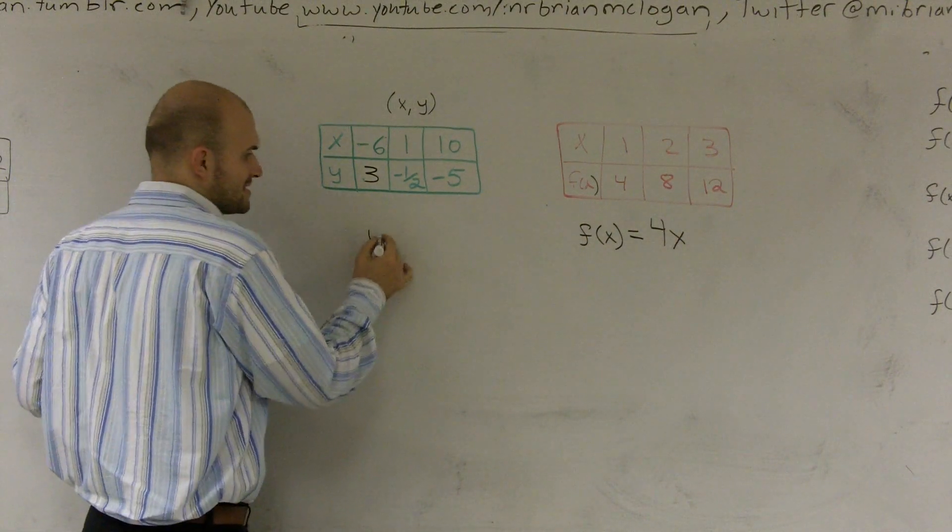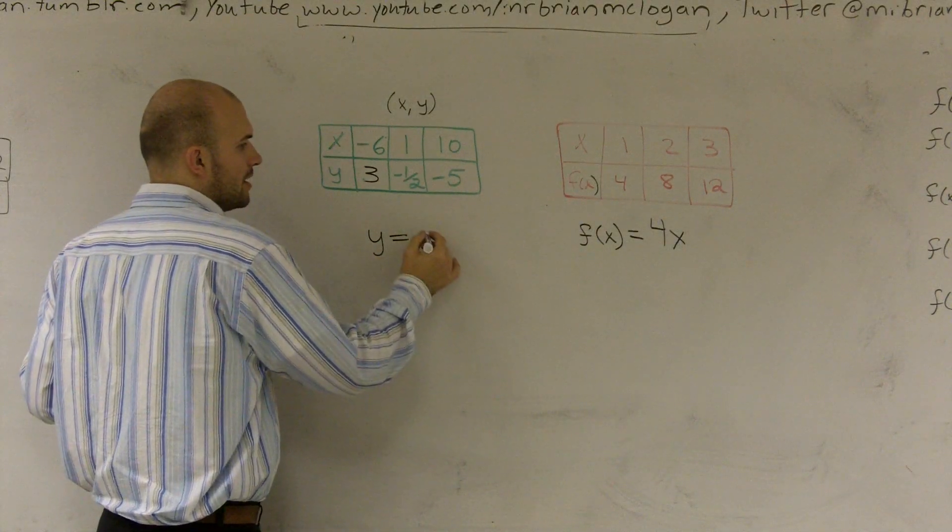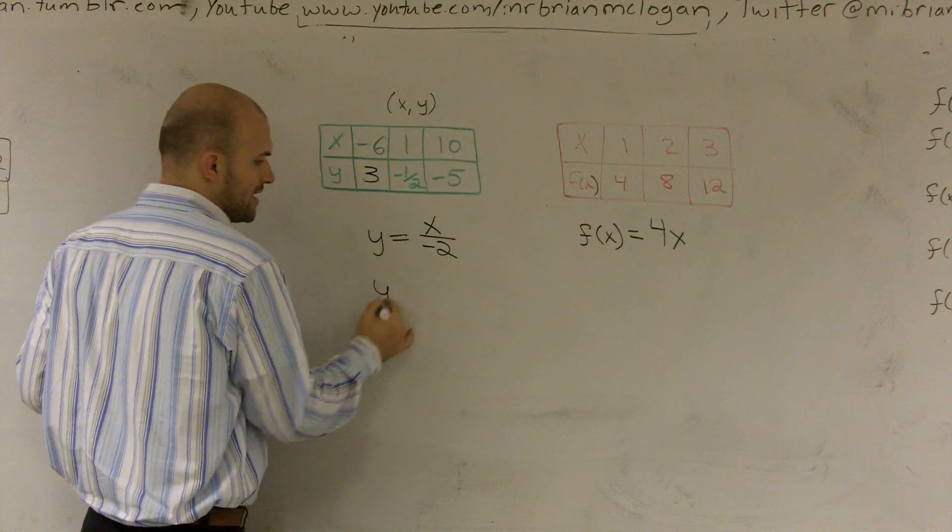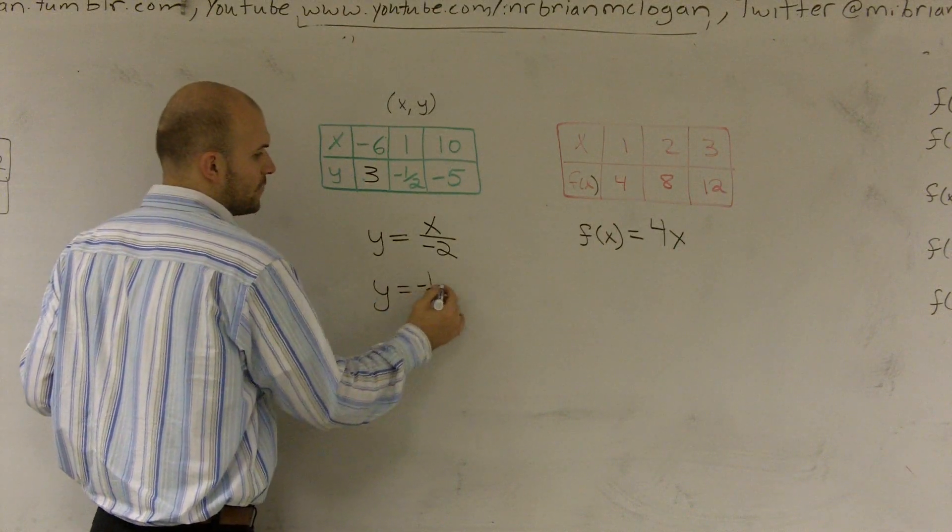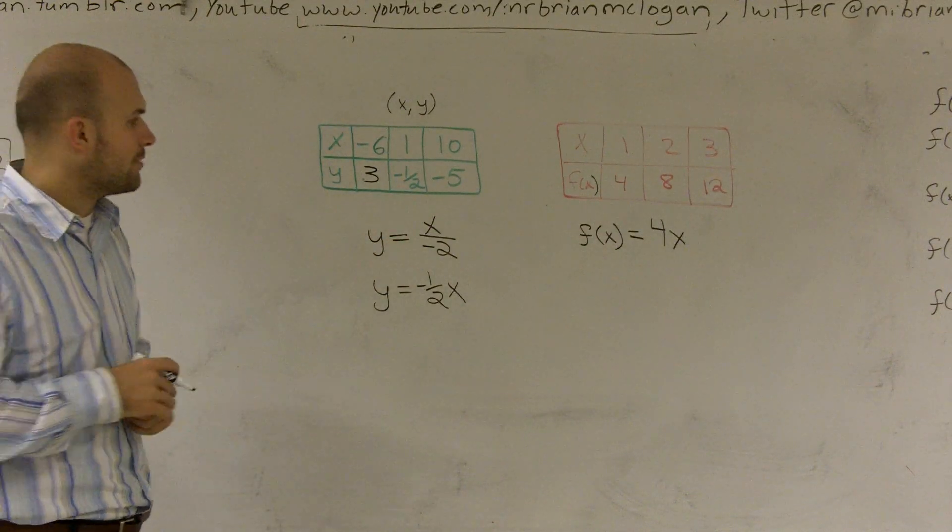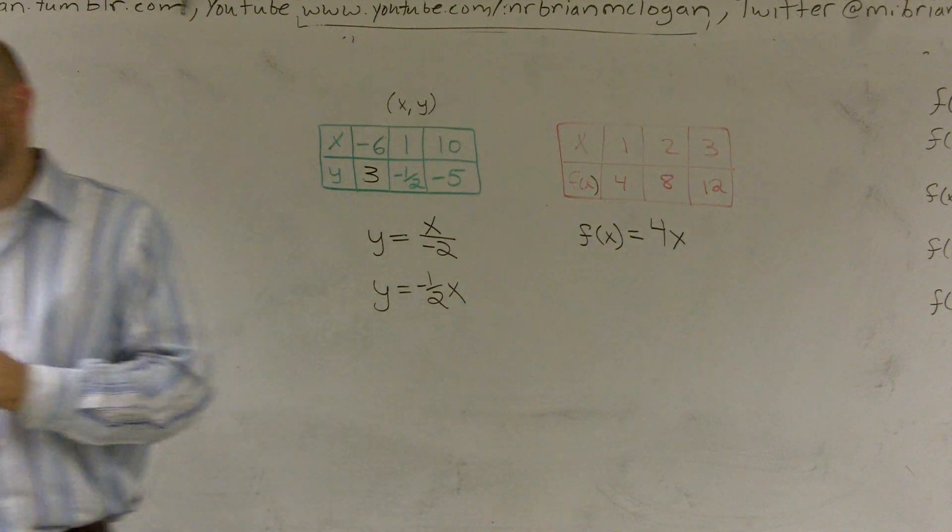So I can write this one as, instead of having f(x), we use y as our output. So y equals, we could say x divided by a negative 2. Or you could write this multiplication as a negative 1 half times x. Either one of those would work, but that is going to be how you rule. So that's how you write rule with multiplication and division.